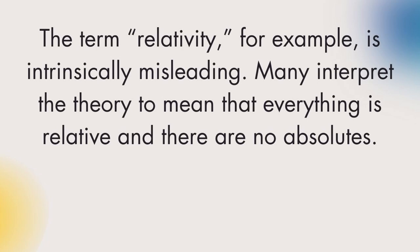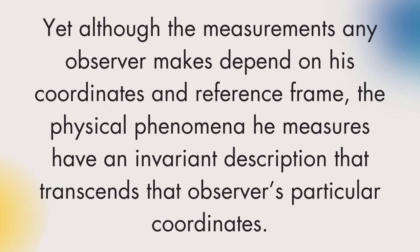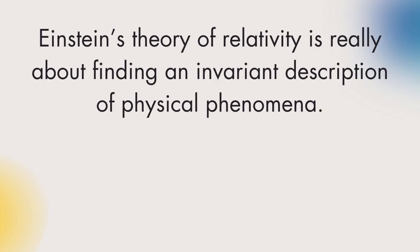Many interpret the theory to mean that everything is relative and there are no absolutes. Yet although the measurements any observer makes depend on his coordinates and reference frame, the physical phenomena he measures have an invariant description that transcends that observer's particular coordinates. Einstein's theory of relativity is really about finding an invariant description of physical phenomena.